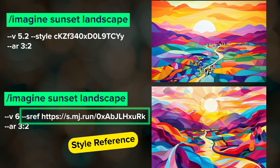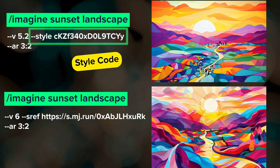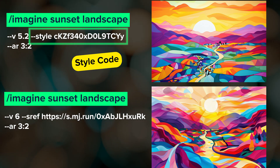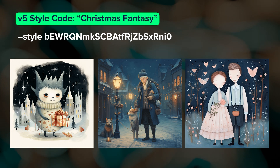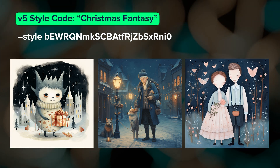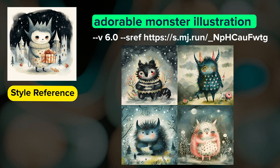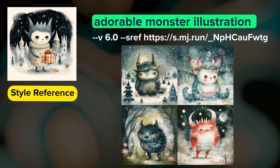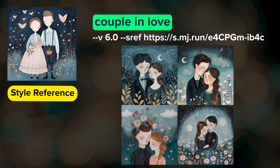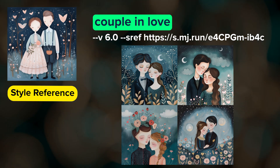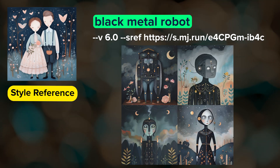You can think of using a style reference as similar to using a style code, but I think style references are more powerful and easier to use. If you have favorite style codes that you've been using in V5, try using some of the images that you created with those style codes as style references and see if you get similar aesthetics in V6. This is a great way to transfer your V5 style codes to a style reference that you can use in V6.